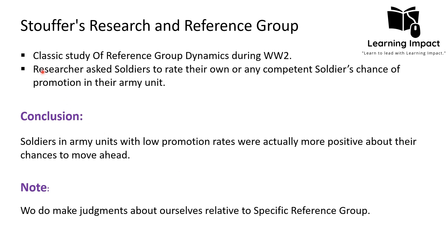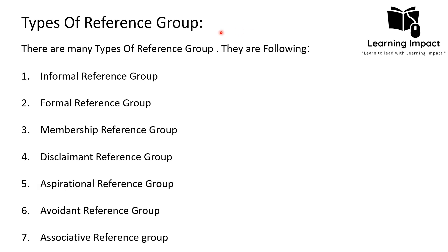The Stouffer research concluded that we make judgments about ourselves relative to a specific reference group, and the type of reference group — whether weak or strong — impacts our own judgment and evaluation of ourselves. There are many types of reference groups: formal, informal, membership, disclaimant, aspirational, avoidant, and associative.